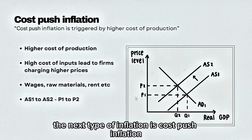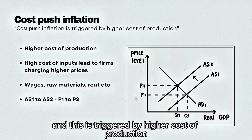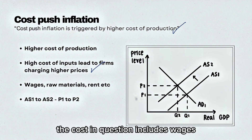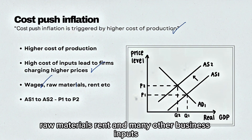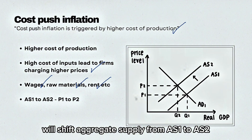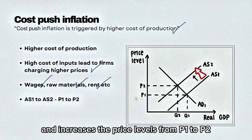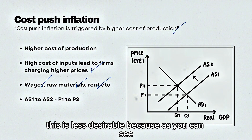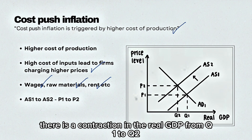The next type is cost-push inflation, triggered by higher costs of production, which leads businesses to charge higher prices for their goods and services. The costs in question include wages, raw materials, rent, and many other business inputs. The result shifts aggregate supply from AS1 to AS2 and increases price levels from P1 to P2. This is less desirable because it results in a contraction in real GDP from Q1 to Q2.